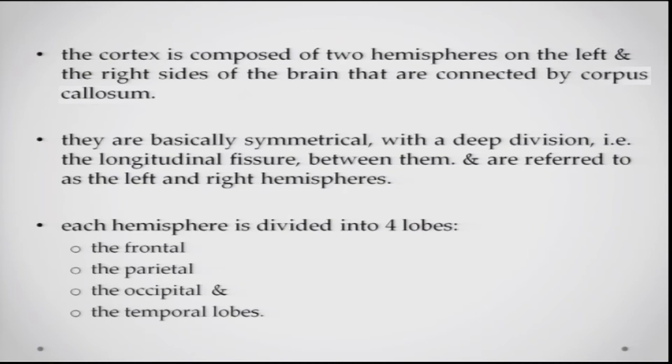The cortex is composed of two hemispheres, one on the left and one on the right, connected together by a bundle of axon fibers called the corpus callosum. The two hemispheres are basically symmetrical and have a deep division called the longitudinal fissure. Each hemisphere is divided into four lobes: the frontal, the parietal, the occipital, and the temporal lobes.